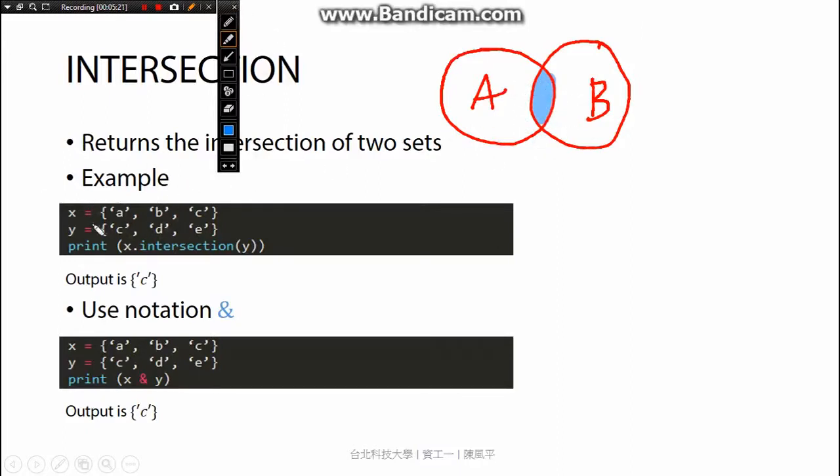For example, x equals a, b, c, y equals c, d, e. So when we call the method intersection for the set x, y, the opposite is c.